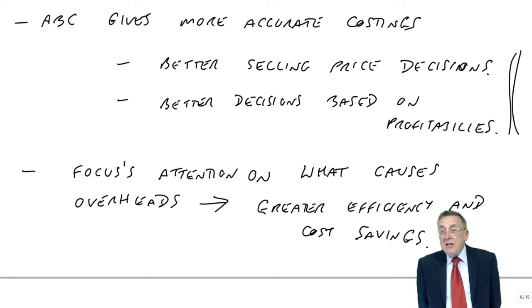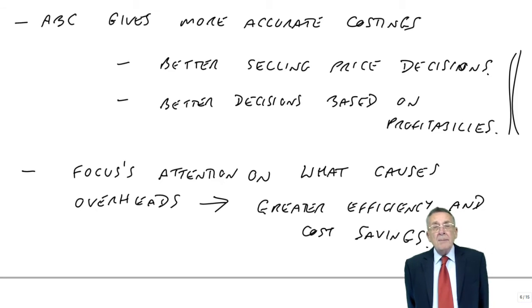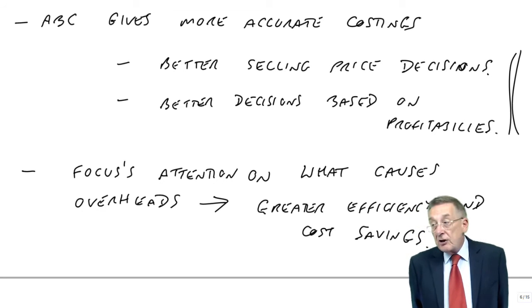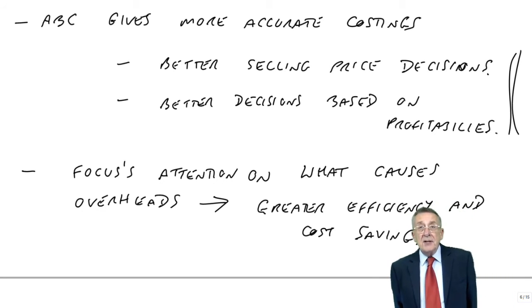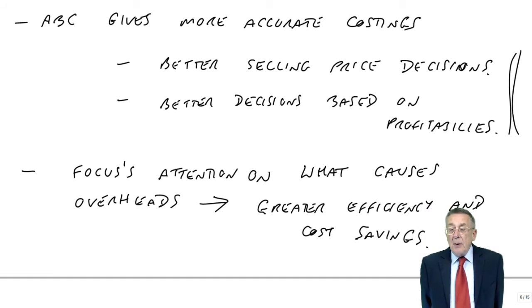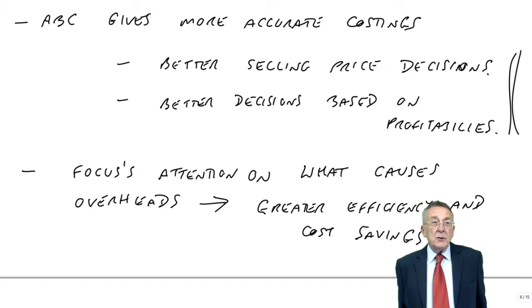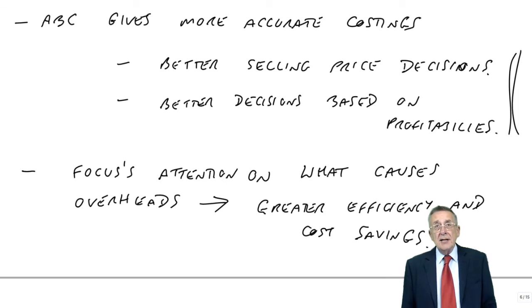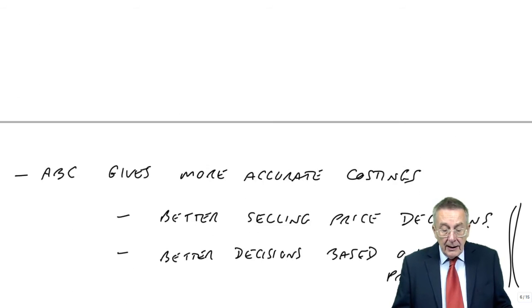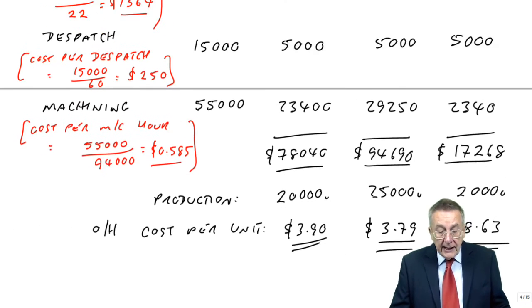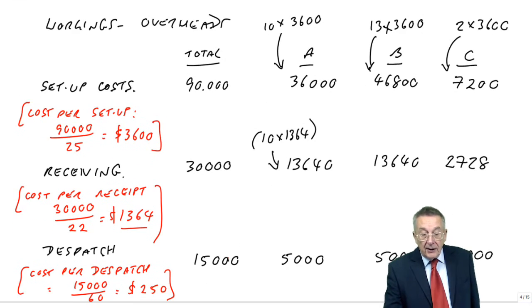Now, what I mean by that, you see, under traditional absorption, we simply said, what if the total of ads is 190,000, and we did the arithmetic, fine, but we didn't spend any time worrying about why were we spending 190,000 in the first place?